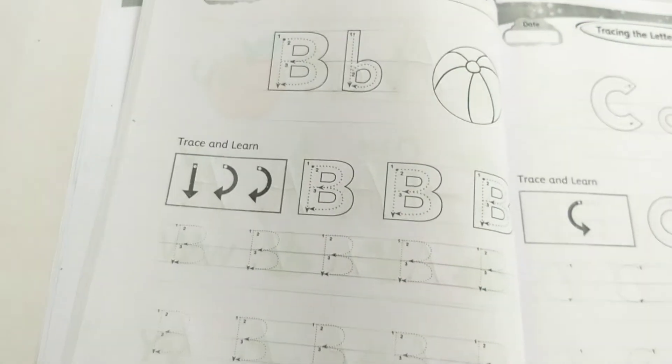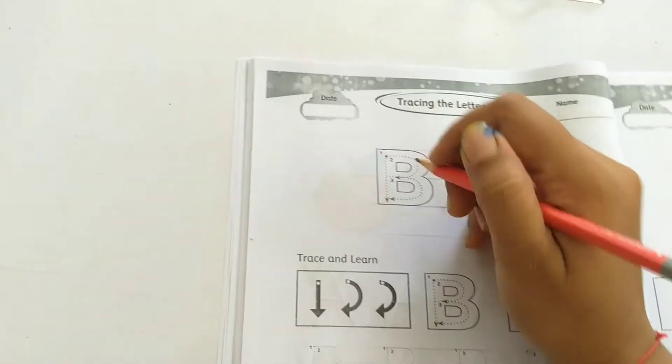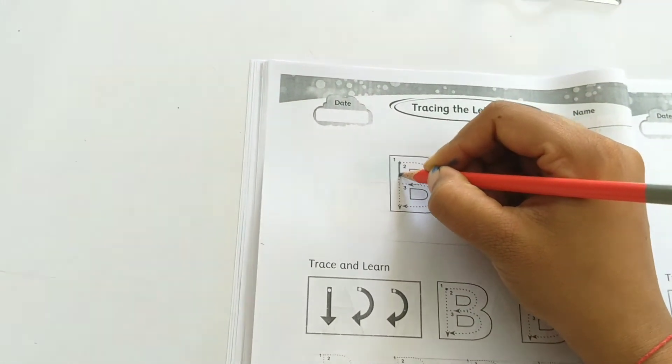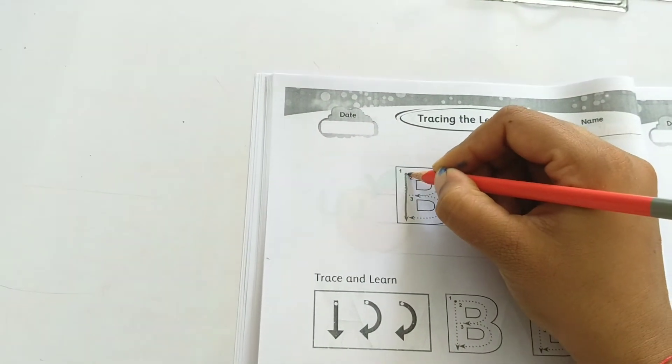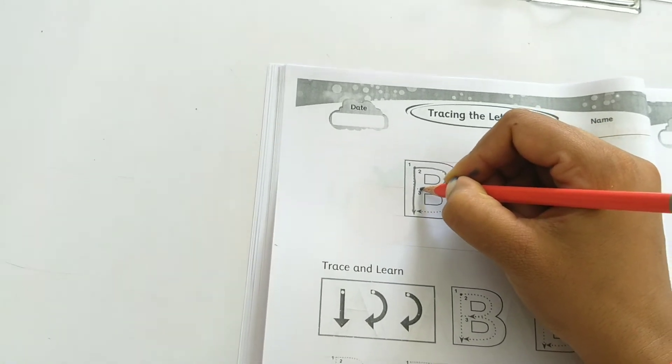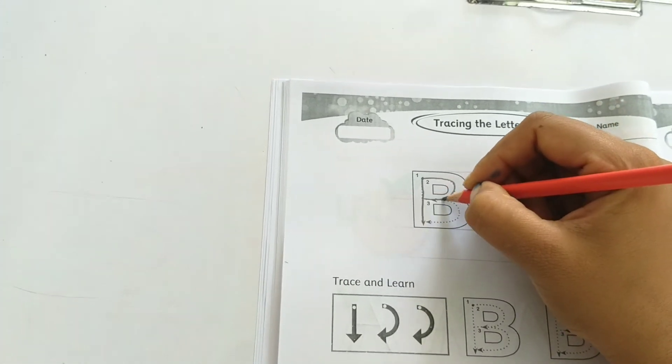Move to page number 39. Tracing the letter B. Letter B is a combination of one standing line and two backward curves. It's capital B, then small b. Color the ball.